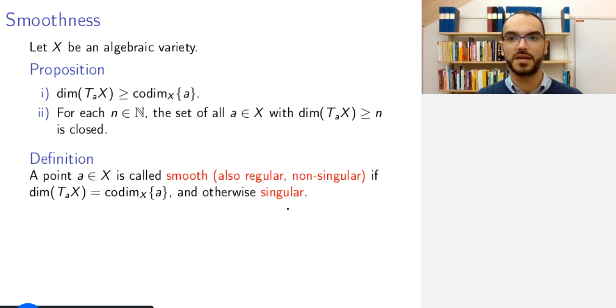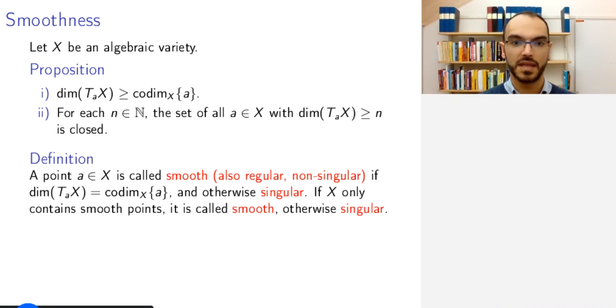And one talks about the smooth locus of a variety, so that's the set of all smooth points, and the singular locus, the set of all singular points. And if X only contains smooth points, then it is called smooth, otherwise it is called singular.